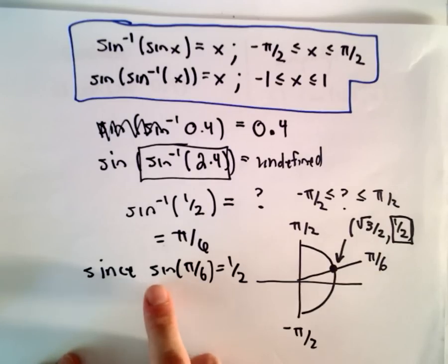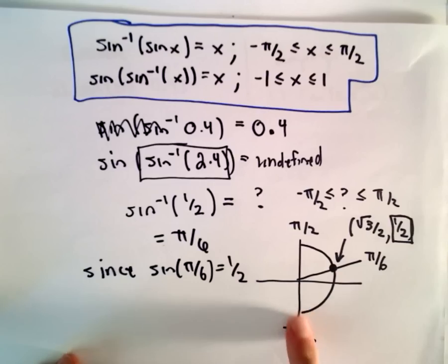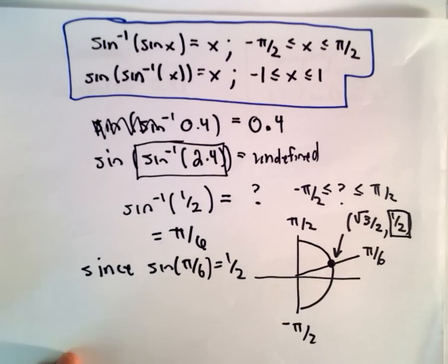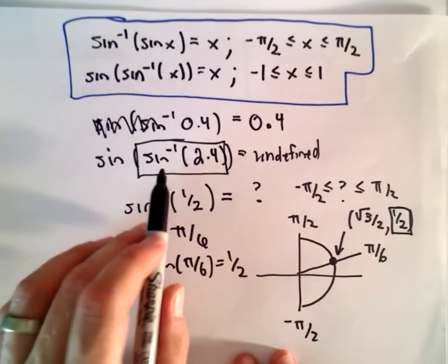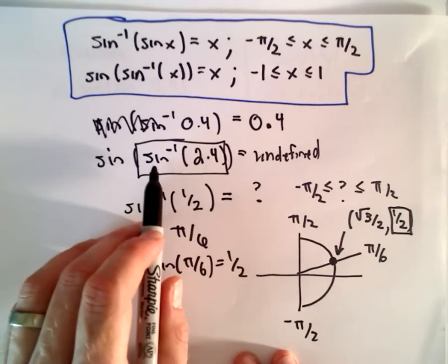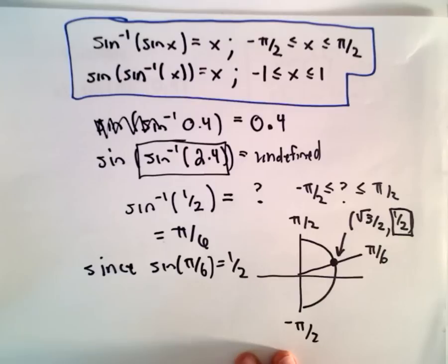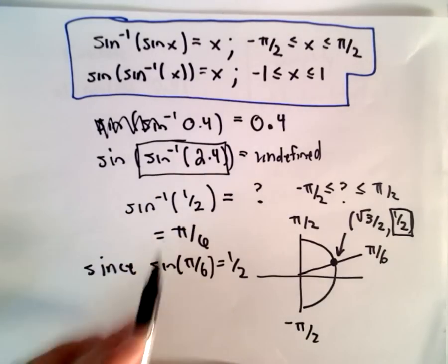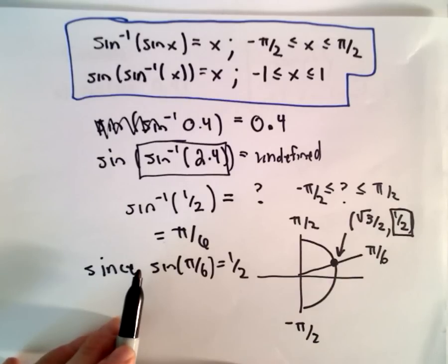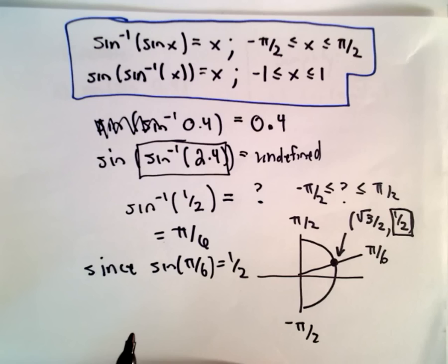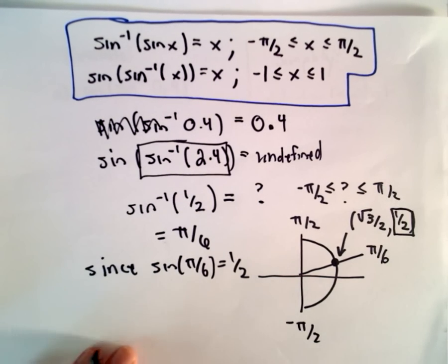There are lots of angles where sine equals 1/2 — infinitely many — but we have to restrict ourselves to between negative π/2 and positive π/2. That's kind of the subtle stuff here. And since there's no angle whose sine gives you 2.4, that's why that case is undefined. If any of this seems confusing, I would say rewatch it. These are important nuances.